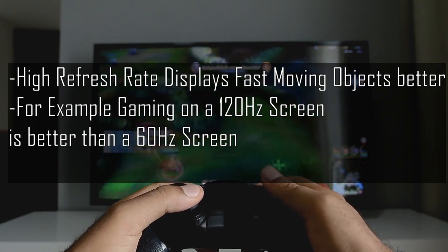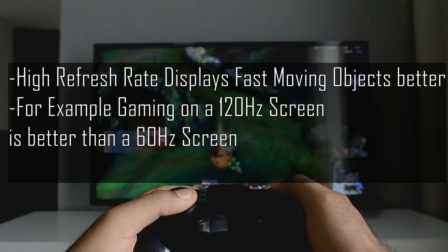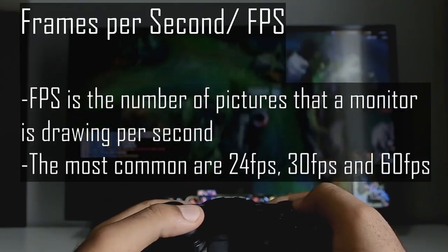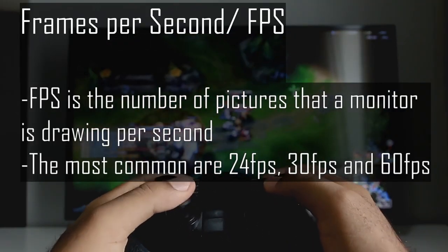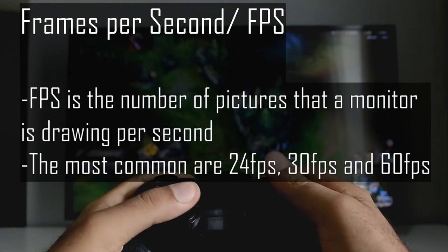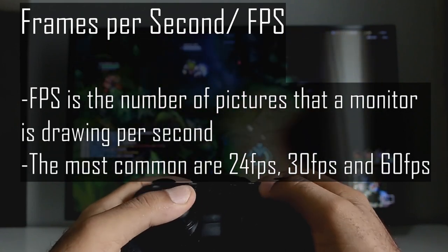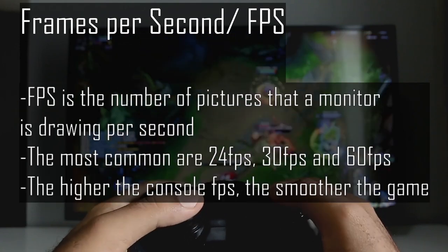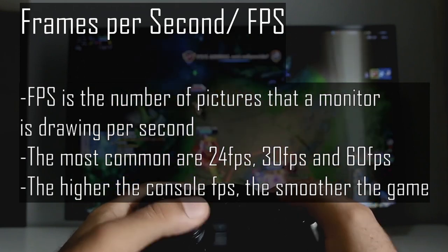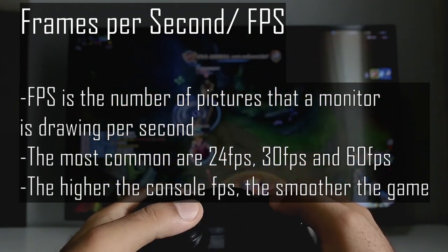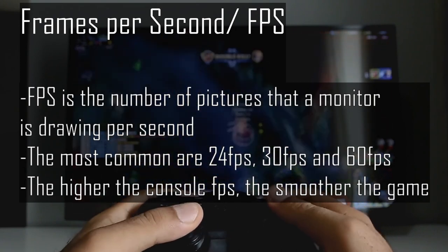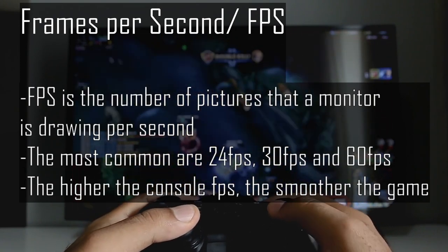Playing games on a 120Hz screen is better than 60Hz. Refresh rate or Hertz should not be confused with frames per second (FPS). FPS is the number of frames that your computer or phone is processing or drawing per second. The higher this number is, the better — you will get more realistic, smoother, and clearer images. This is also a big advantage for gamers.